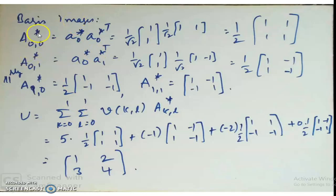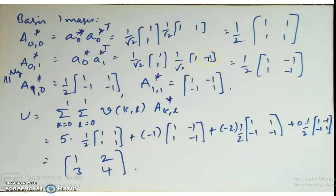The basis images are computed as A_{k,l}* = A_k*·(A_l*)^T. For A_{0,0}*: A_0*·(A_0*)^T = (1/√2)[1;1]·(1/√2)[1,1] = (1/2)[1,1;1,1]. For A_{0,1}*: A_0*·(A_1*)^T = (1/2)[1,-1;1,-1]. For A_{1,0}*: (1/2)[1,1;-1,-1]. For A_{1,1}*: (1/2)[1,-1;-1,1]. Verifying: U = summation over k,l of v(k,l)·A_{k,l}* = 5·(1/2)[1,1;1,1] + (-1)·(1/2)[1,-1;1,-1] + (-2)·(1/2)[1,1;-1,-1] + 0·(1/2)[1,-1;-1,1] = [1,2;3,4]. The reconstruction is correct.